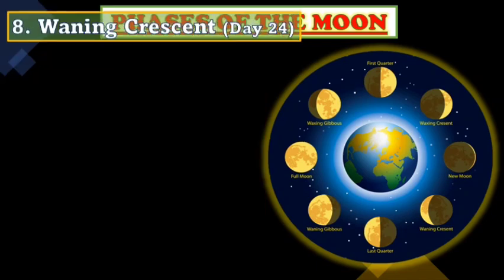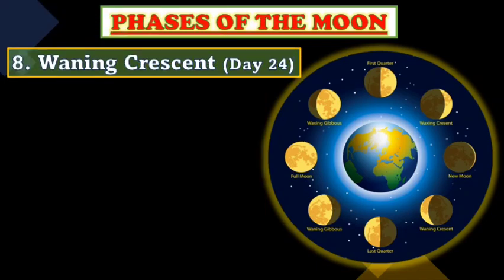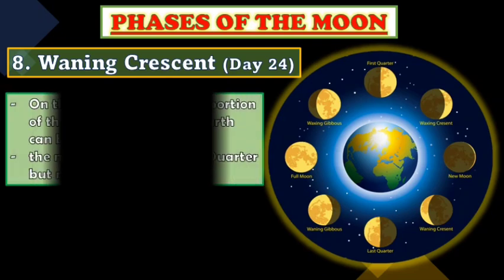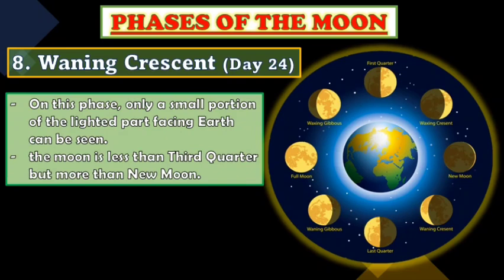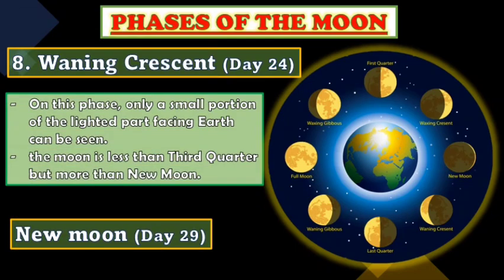Number eight is the Waning Crescent on day twenty-four. On this phase, only a small portion of the lighted part facing Earth can be seen — the Moon is less than the third quarter but more than the new moon. Then, on day twenty-nine, we return to the New Moon, and the cycle begins again. That is the complete cycle of the Moon's phases.